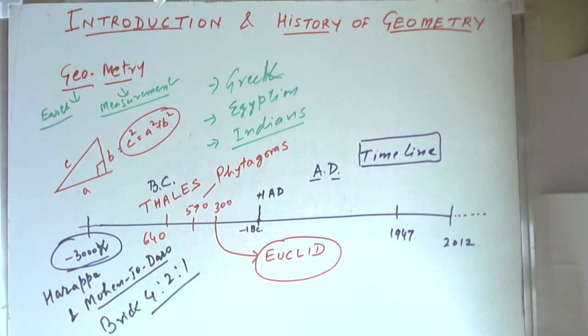It developed simultaneously by Indians, Egyptians and Greeks and there are a lot of evidences available in all three civilizations. Egyptians also built pyramids and building pyramids requires a lot of knowledge of geometry.